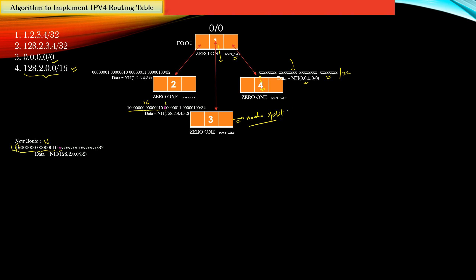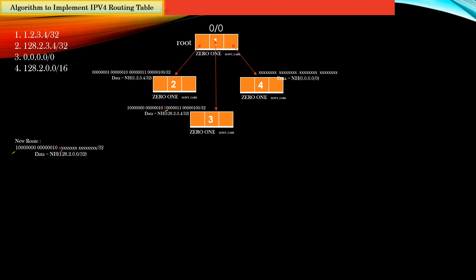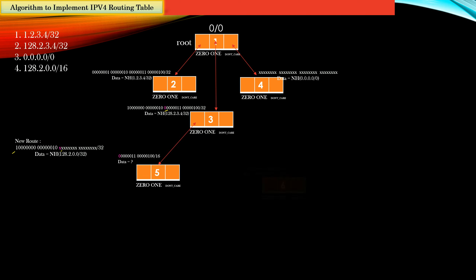Now what is the node split procedure? Let us discuss that. Node number 3 will undergo node split because while traversing down the mtrie from the root node, at node number 3 there occurs a mismatch in the effective prefix of node 3 and the effective prefix of the new route. The bit at which the mismatch happens is shown in pink. As part of the node split procedure, the very first thing we do is create two new nodes — node number 5 and node number 6.